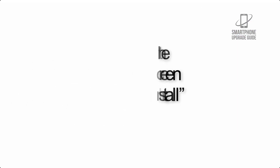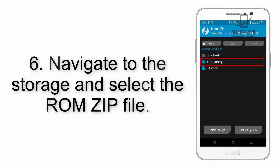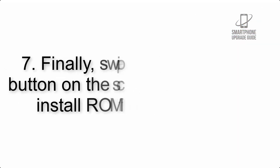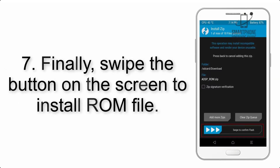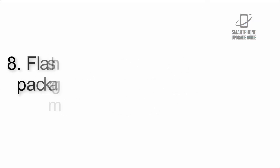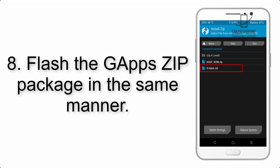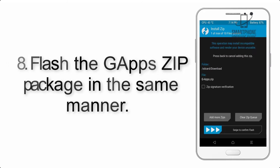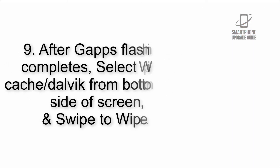Step 6: Navigate to the storage and select the ROM zip file. Step 7: Finally, swipe the button on the screen to install the ROM file. Step 8: Flash the GApps zip package in the same manner.